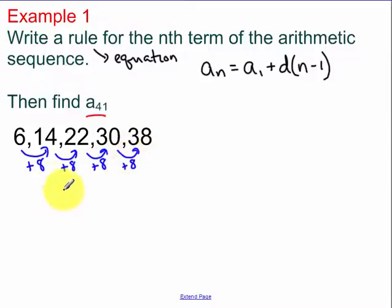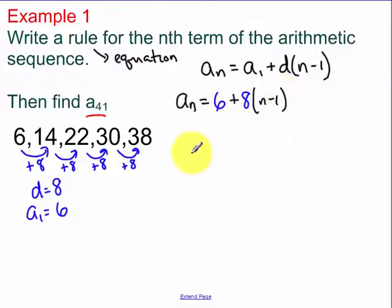And it might help you guys if you lay out, d is 8. Our first term is equal to 6. So that you can just then easily plug into your formula. I'm looking for a formula for the nth term. That's going to be one of my variables. a sub 1 we just said was 6, plus our common difference we just said was 8, times n minus 1. Now it's just a matter of simplifying.